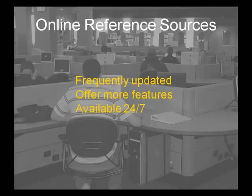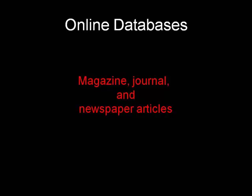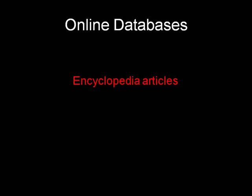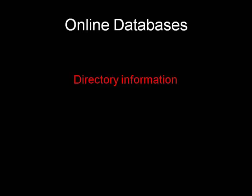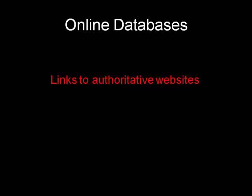Online reference sources may contain any or all of the following types of information: magazine, journal, and newspaper articles; encyclopedia-type articles; content from full-text e-books; dictionaries; multimedia such as images and video; directory-type information; links to authoritative websites; and statistical data.